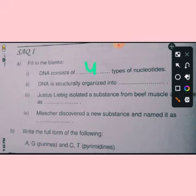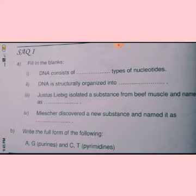3rd question: Just as live egg is isolated as substances from beef muscle and named it as? Inocenic acid.